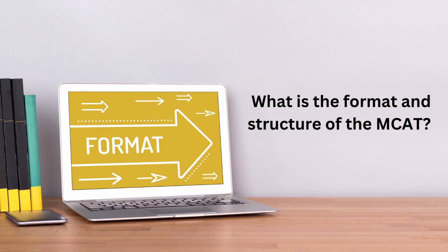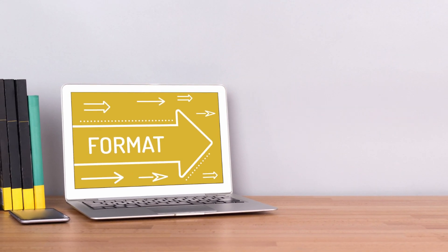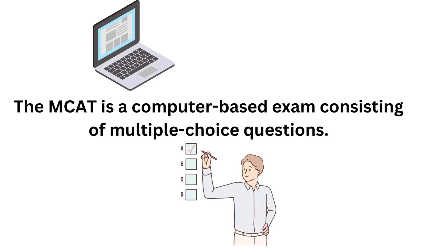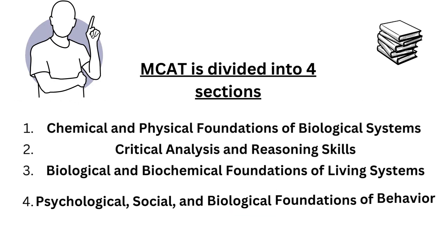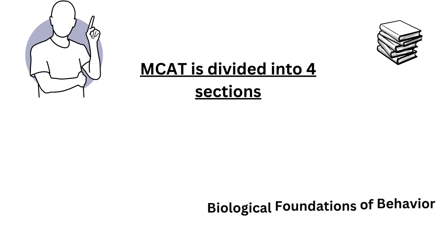What is the format and structure of the MCAT? The MCAT is a computer-based exam consisting of multiple-choice questions. It is divided into four sections: Chemical and Physical Foundations of Biological Systems, Critical Analysis and Reasoning Skills, Biological and Biochemical Foundations of Living Systems, and Psychological, Social, and Biological Foundations of Behavior.